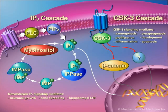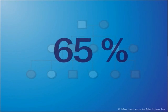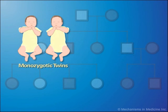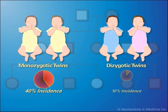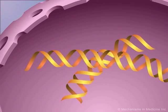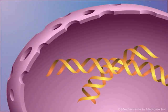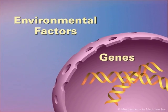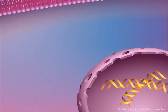The heritability of bipolar disorder is around 80%. Monozygotic twins are reported to have a higher incidence of developing bipolar disorder, approximately 40%, whereas the incidence is only 10% in dizygotic twins. Although the process of developing bipolar disorder likely arises from complex interactions between genes and environmental factors, the specific genes that contribute to this risk are not known with certainty.